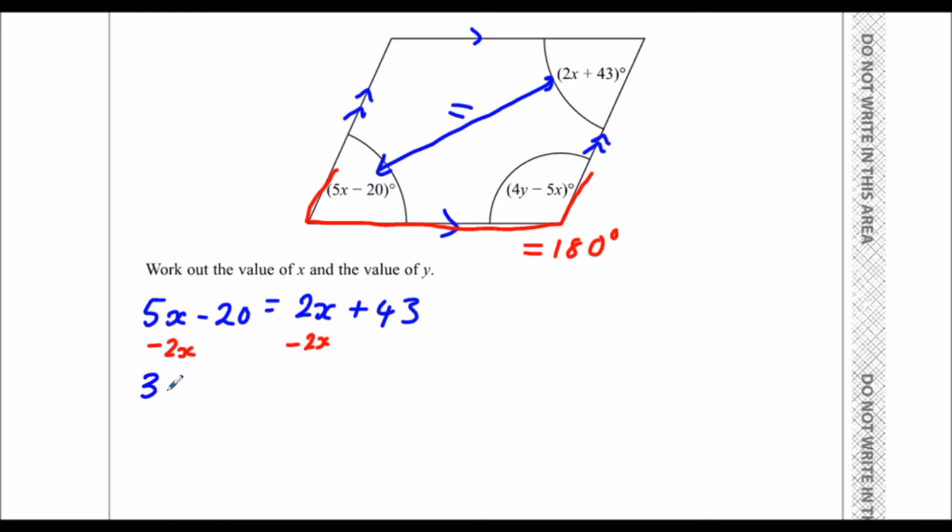That will leave me with 3x minus 20 is equal to 43. I'm going to get rid of the minus 20 now, to get x by itself. I'm going to add 20 to both sides to do that. So that leaves me with 3x is equal to 63.